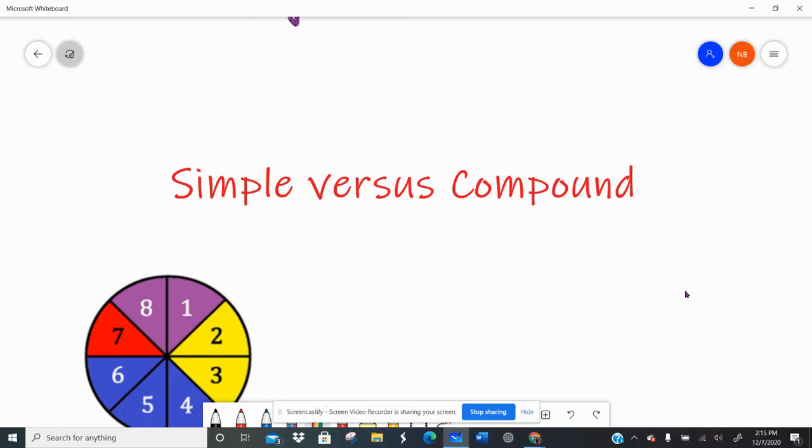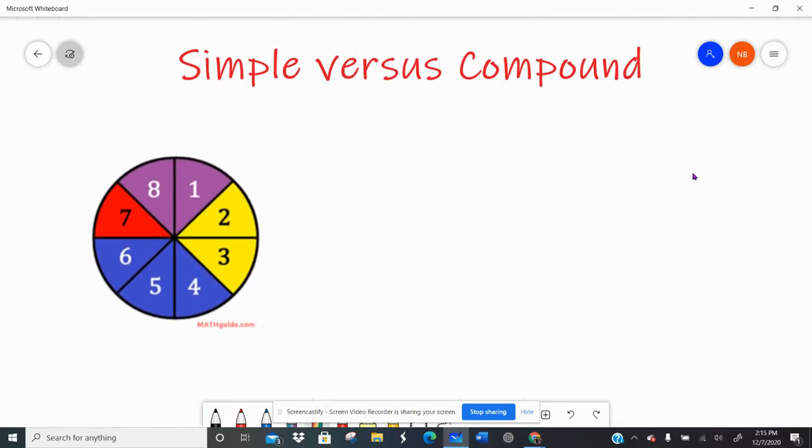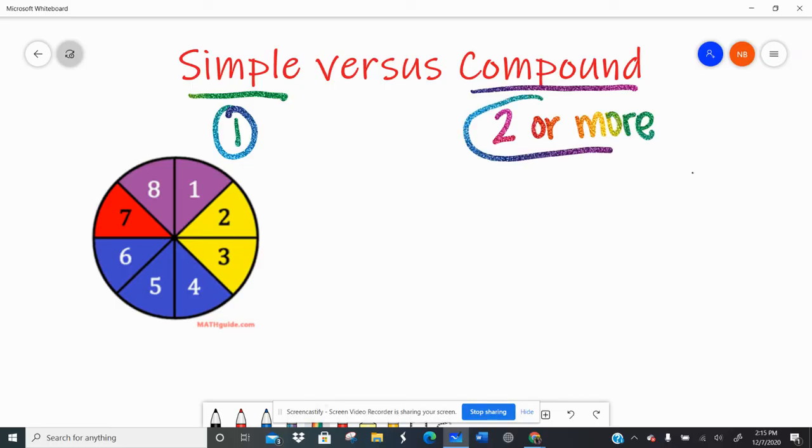There's two types of probability we'll focus on during this video. There's simple probability, which means one thing is going to happen, and then there's a compound probability, which means two or more events will take place. So simple and compound. Let's talk about simple probability first.